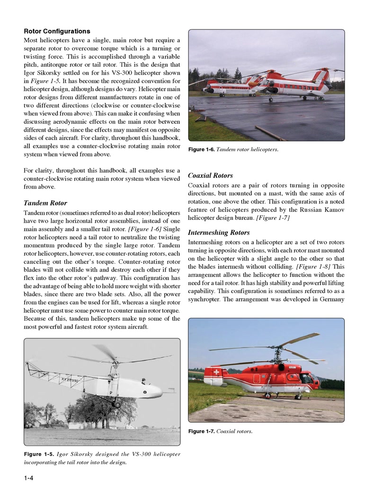Tandem Rotor. Sometimes referred to as dual rotor, tandem helicopters have two large horizontal rotor assemblies instead of one main assembly and a smaller tail rotor. Single rotor helicopters need a tail rotor to neutralize the twisting momentum produced by the single large rotor. Tandem rotor helicopters, however, use counter-rotating rotors, each canceling out the other's torque. Counter-rotating rotor blades will not collide with and destroy each other if they flex into the other rotor's pathway. This configuration has the advantage of being able to hold more weight with shorter blades, since there are two blade sets. Also, all the power from the engines can be used for lift, whereas a single rotor helicopter must use some power to counter main rotor torque. Because of this, tandem helicopters make up some of the most powerful and fastest rotor system aircraft.